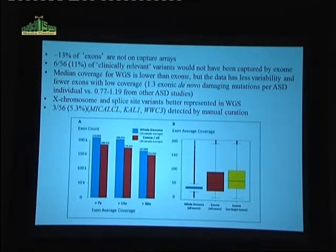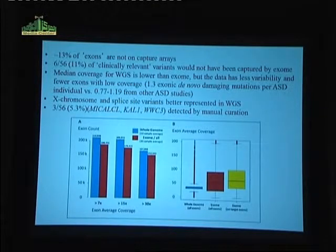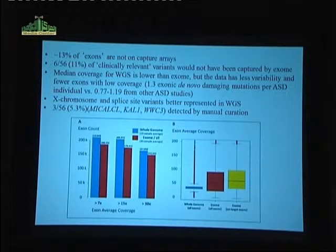We found mutations on the X chromosome because we could look for them. And then ultimately, this manual annotation — where we went and looked manually to see if there were any mutations being filtered out — yielded another 5% or so of the mutations.